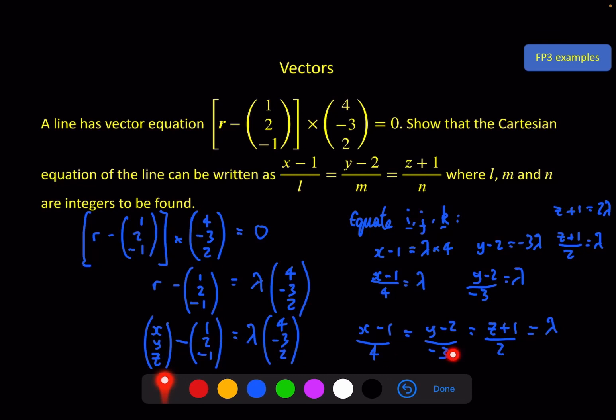And we do indeed have l is 4, m is -3, and n is 2 as expected.